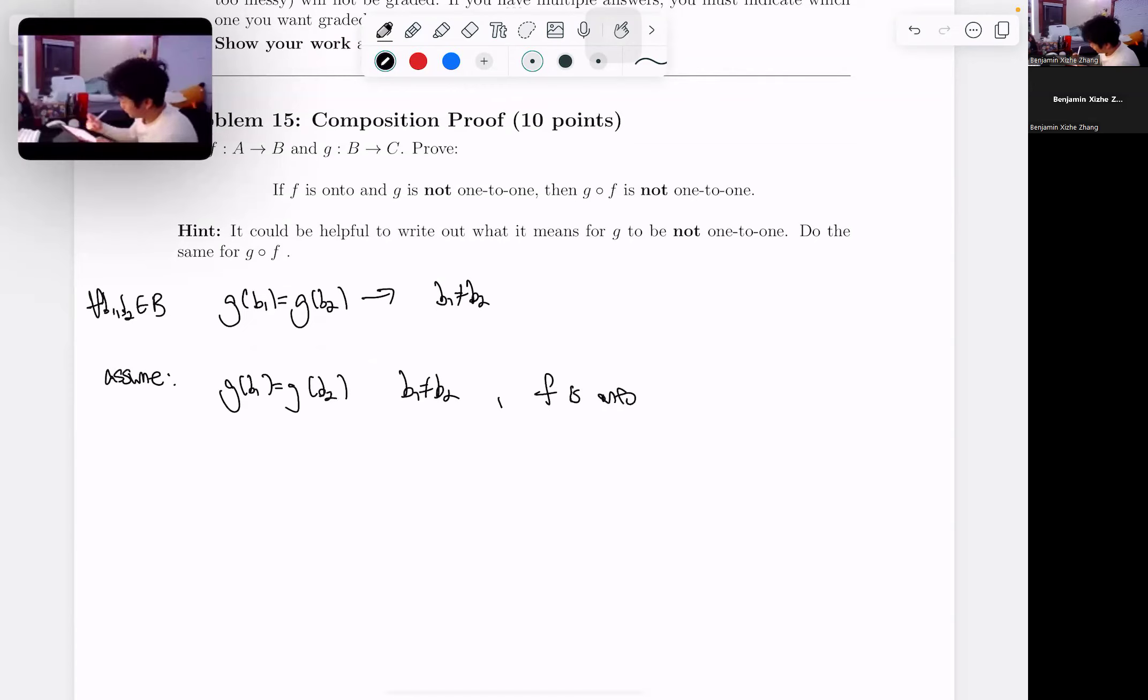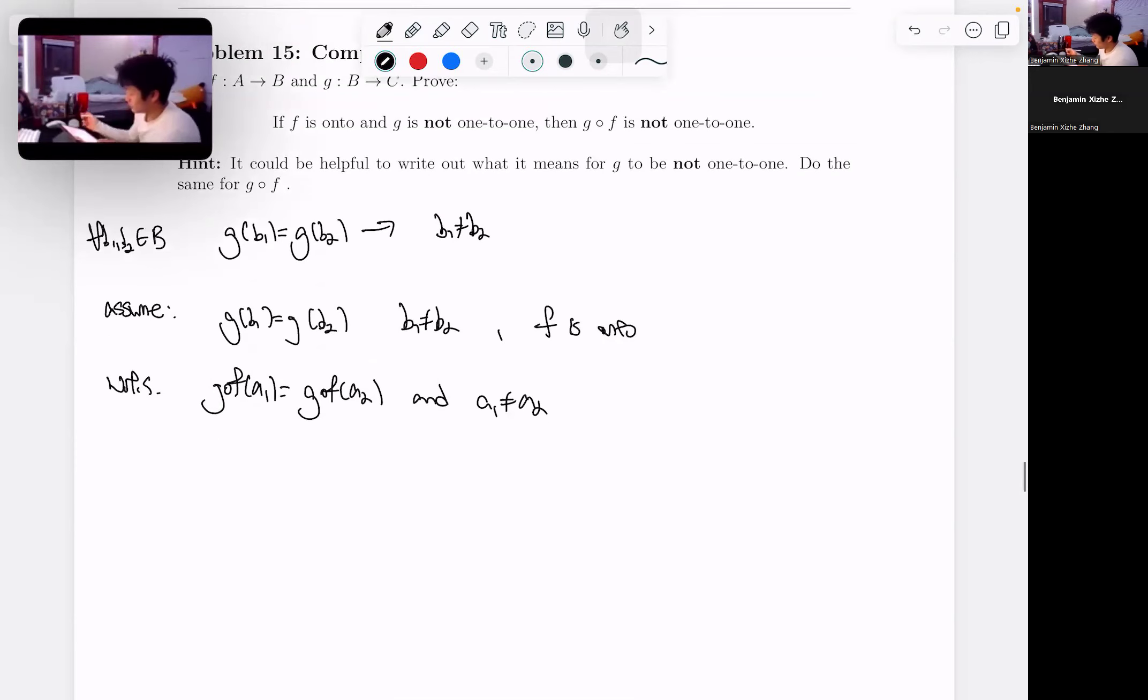And now for g of f, which is what we want to show. We want to show that g of f is also not one-to-one. So what does that mean? g of f of a1 equals g of f of a2, and a1 does not equal a2. That's what we want to prove.